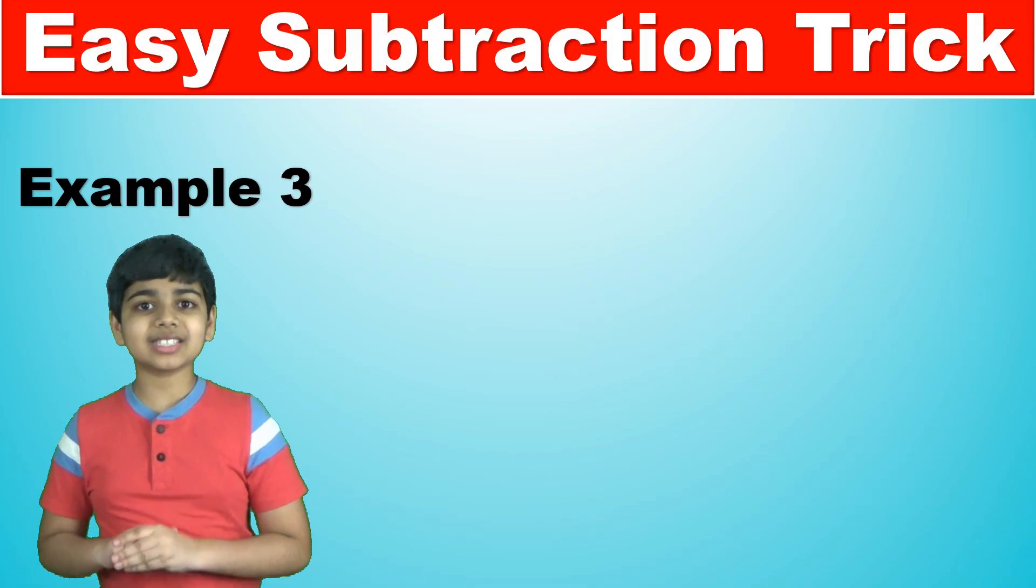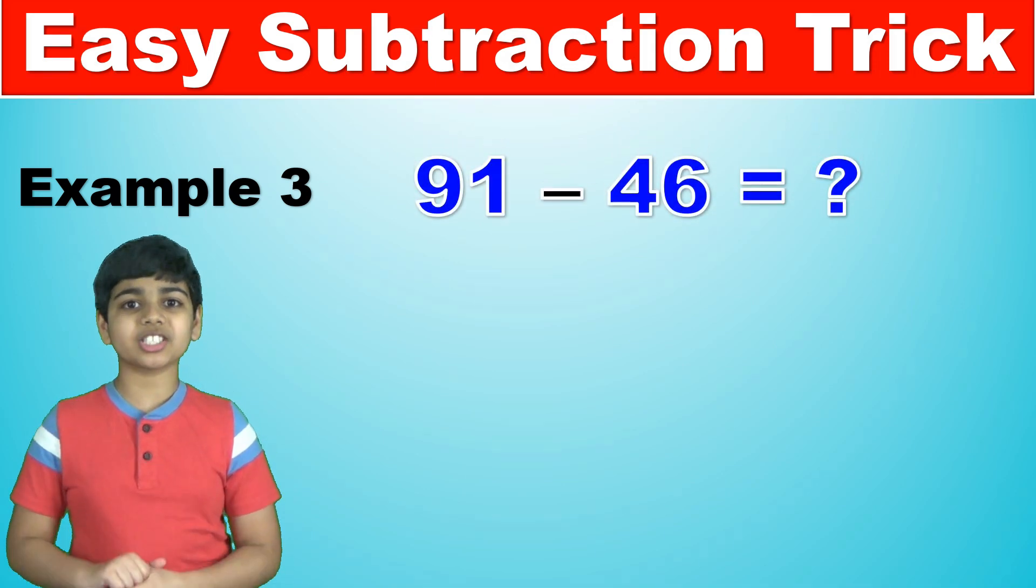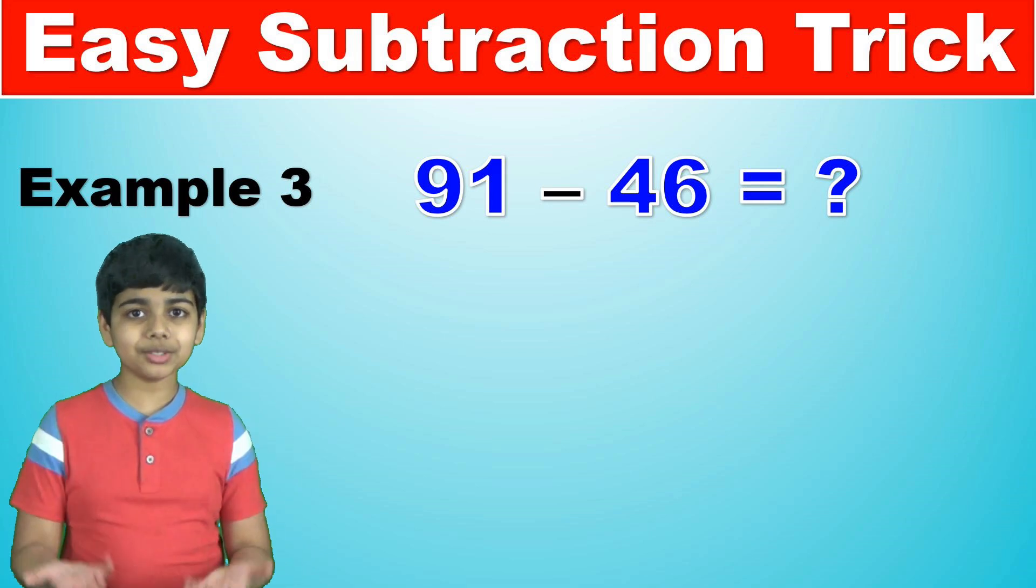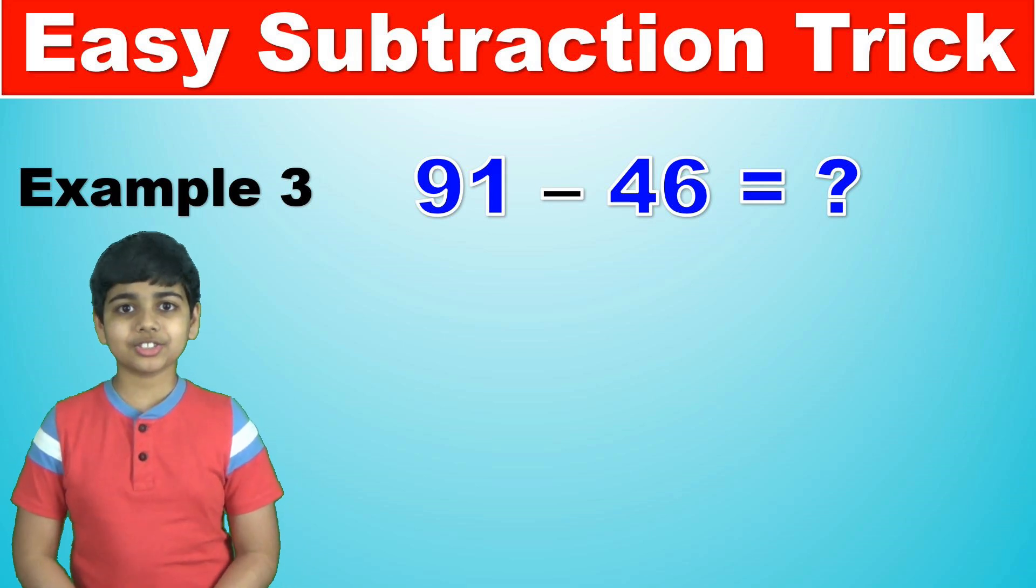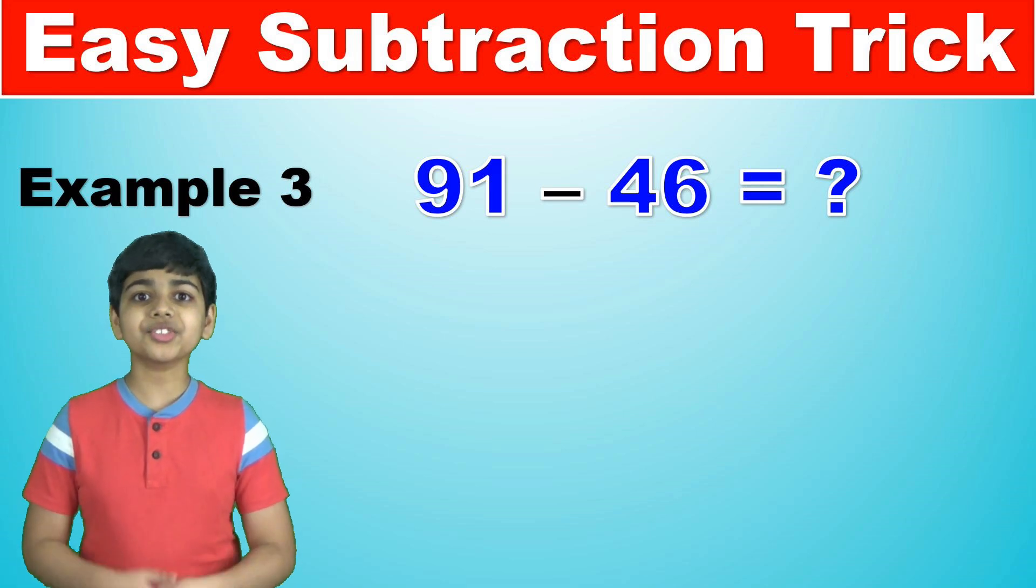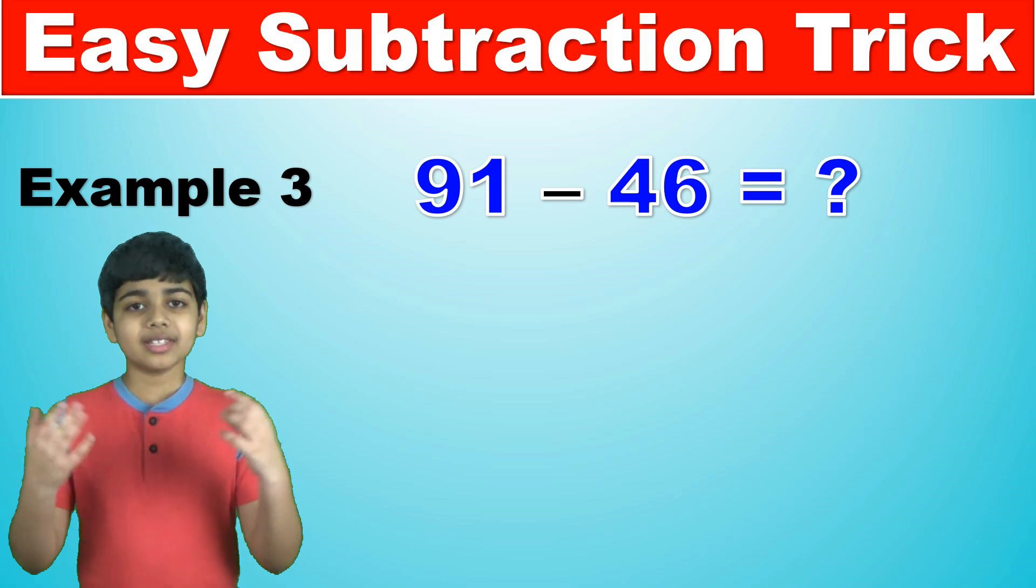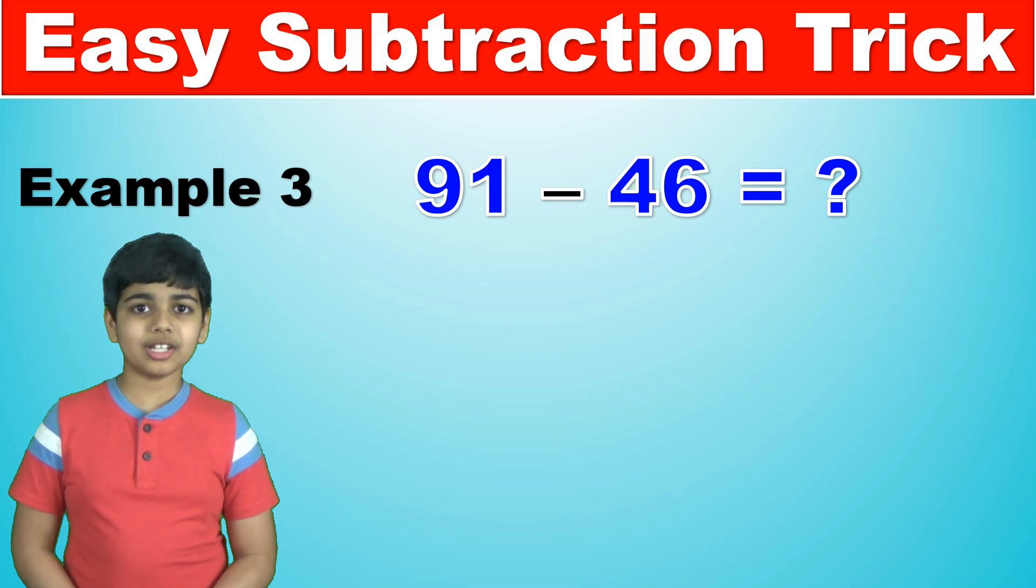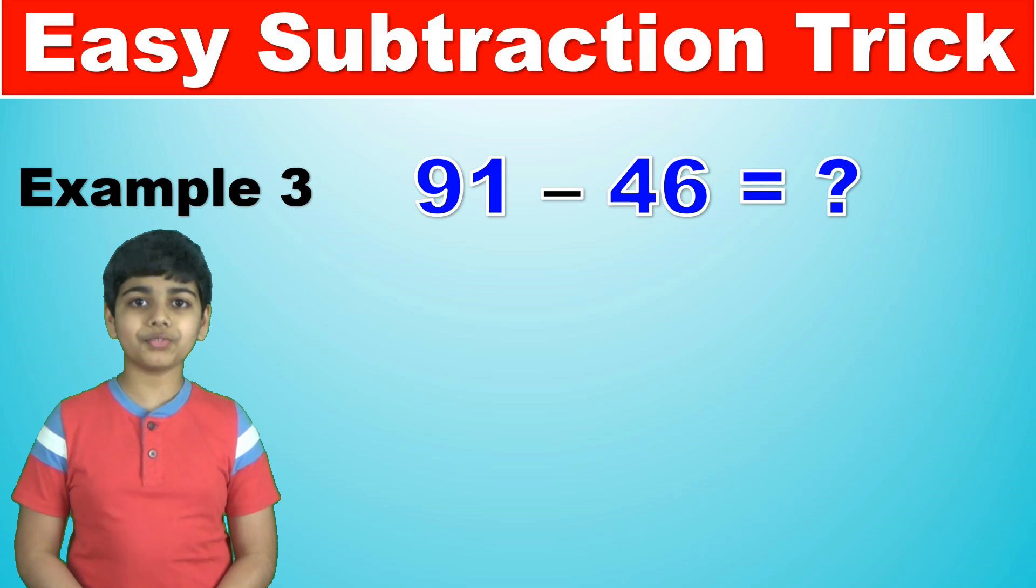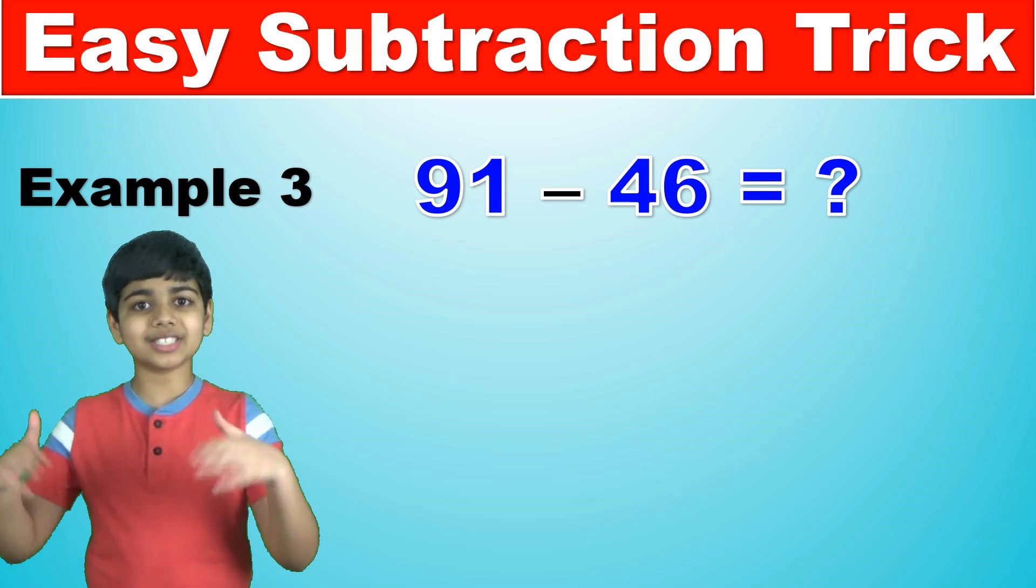Let's take a look at a couple more examples. Let's take the example of 91 minus 46. So again, we'll take 46 here and find the nearest multiple of 10. So in this case, the nearest multiple of 10 to 46 is 50. And so that's what we'll have here. And 50 minus 46 is 4. So 4 is the difference here.